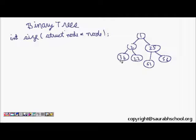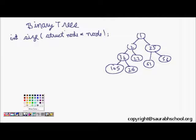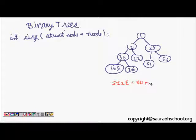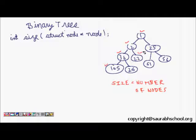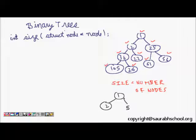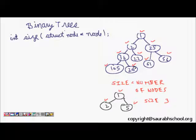Let's add a few more nodes: 100, 5, and 26. So this is our tree. What we want is to find the size of the tree. Size is equal to the number of nodes in the tree. Here we have nine nodes. Similarly, for a smaller tree with nodes 1, 2, and 5, the size function returns 3, and for our bigger tree it returns 9.